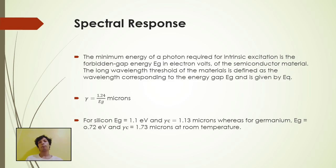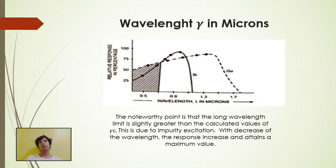For silicon, Eg is equal to 1.1 eV and gamma c is equal to 1.13 microns. Whereas for germanium, Eg is equal to 0.72 eV and gamma c is equal to 1.73 microns at room temperature.